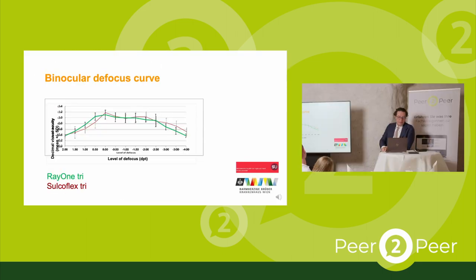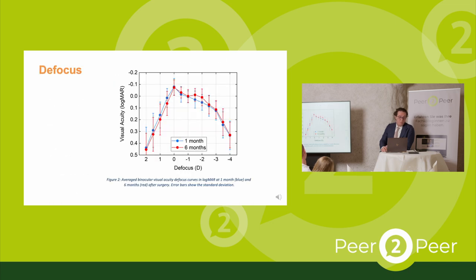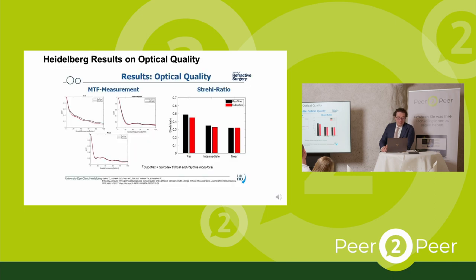For duet implantation results, we compared this to the Rayner trifocal bag lens, and the defocus curve was almost the same — published in the Journal of Refractive Surgery. After half a year, there was no change in the defocus curve. Heidelberg results comparing the single Rayner lens to the add-on duet procedure showed no significant difference in the Strehl ratio. The reflectance of the SalkoFlex lens was 0.8%, compared to 1.1% for an Acrysof lens — no meaningful difference in light quality.